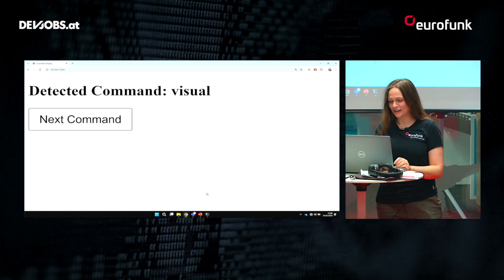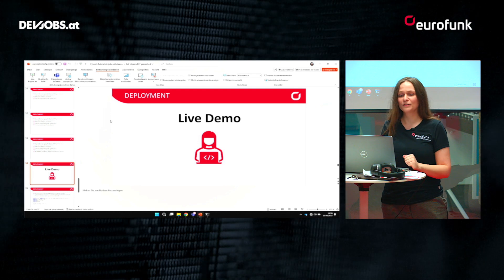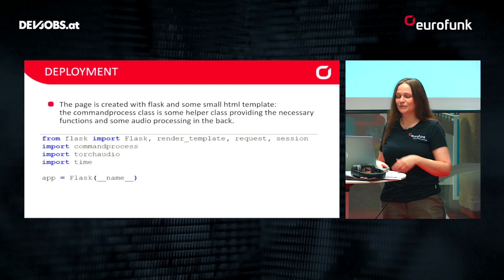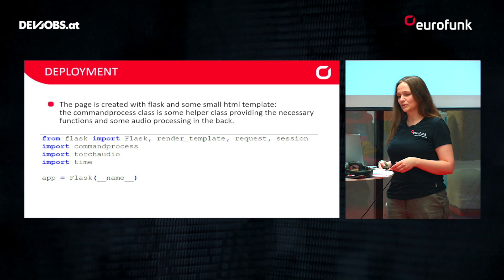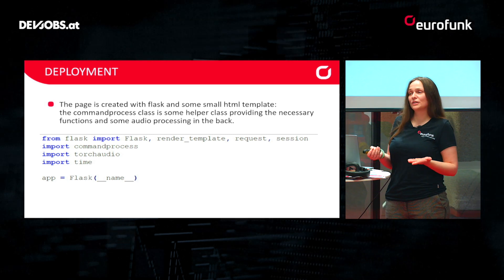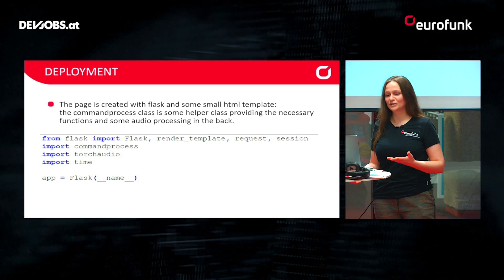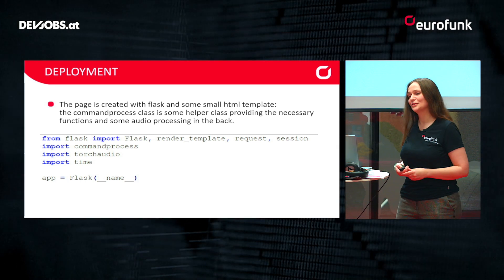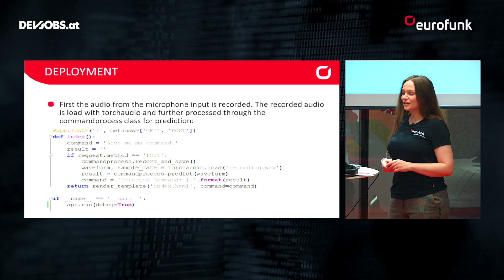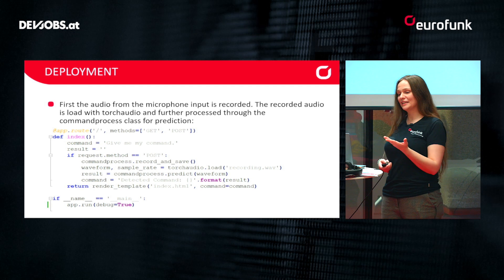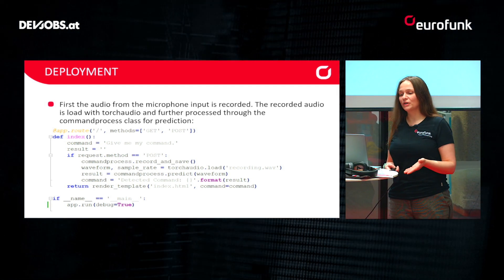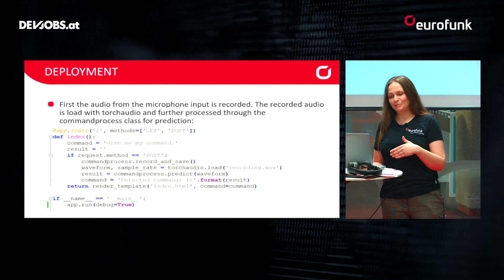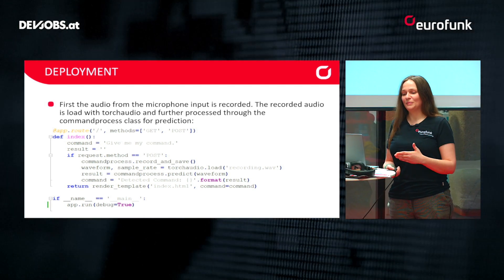I'll also show you some of the code. This is the Flask part — all the imports. TorchAudio makes a lot of things much easier; otherwise you'd have to load the waveforms and pass them to a tensor manually. The core of the script is: I record my audio, then load it with TorchAudio, pass it to the model, and get back my detected command.